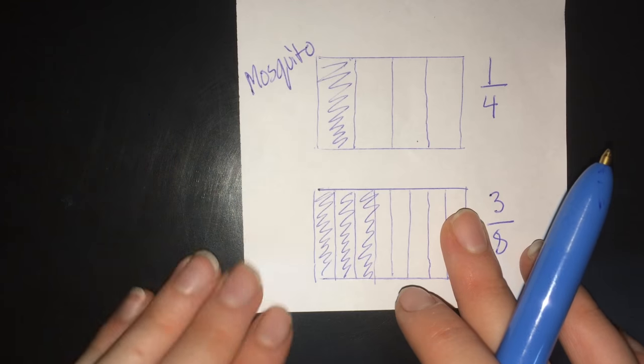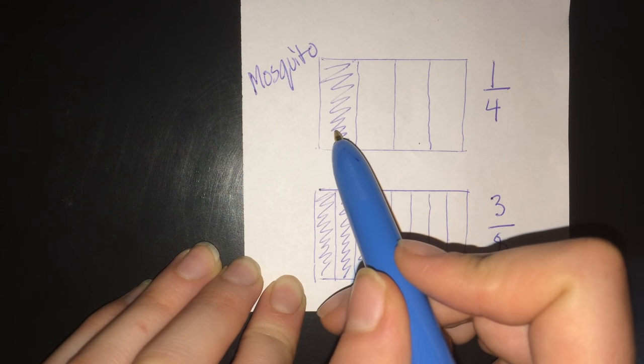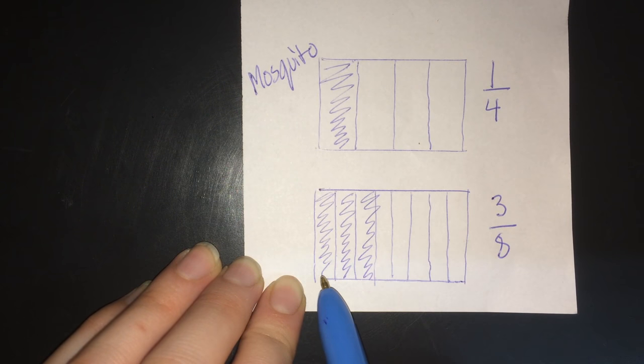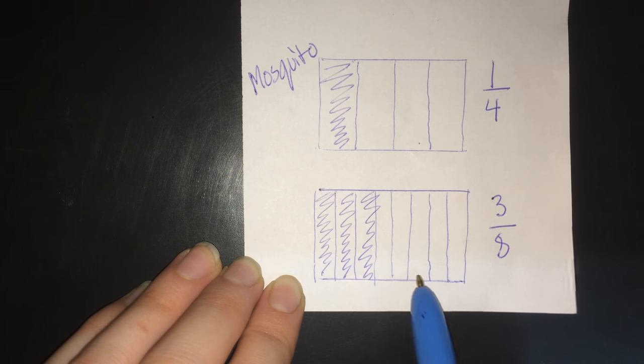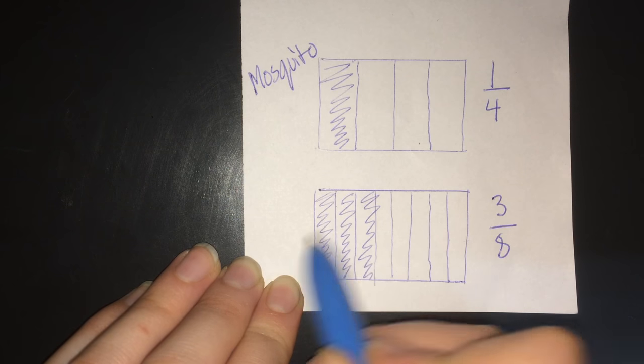And I also modeled it using a rectangle. And I divide this one into fourths, one, two, three, four, and shaded one-fourth. And I divide this one to eight, one, two, three, four, five, six, seven, eight. And I shaded three of them. And again, I can tell that three-eighths is going to be bigger, look more shaded.